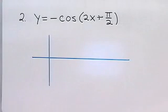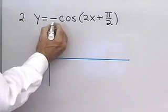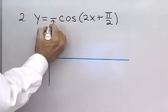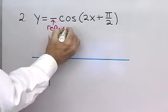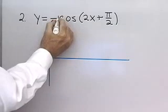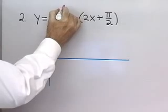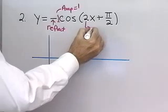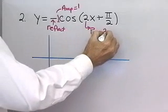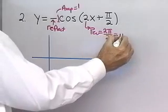Let's try another one: y equals negative cosine of 2x plus pi over 2. The negative sign tells me that the graph is reflected. The coefficient 1 tells me that the amplitude is 1. This coefficient tells me that the period is going to be 2 pi divided by 2, which is pi.